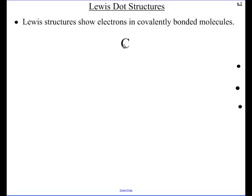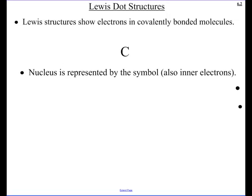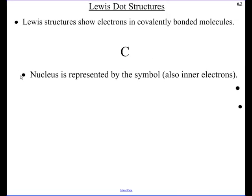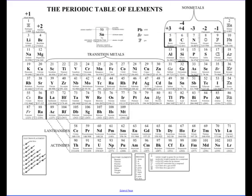For Lewis dot structures, we start with a central atom — whatever atom it happens to be. That represents the nucleus. Let's say we're dealing with carbon. The electron configuration for carbon is 1s2, 2s2, 2p2.